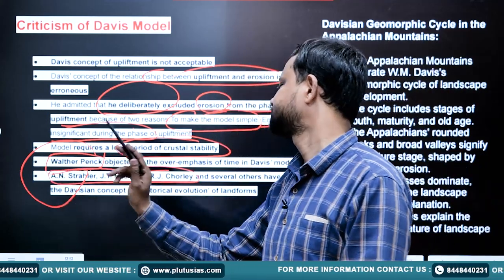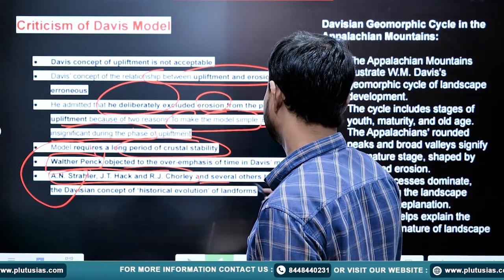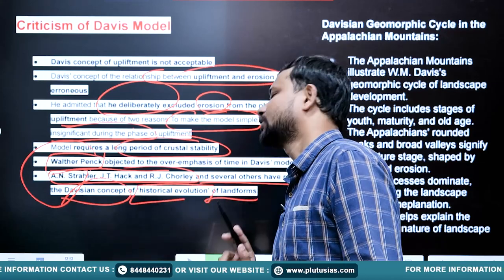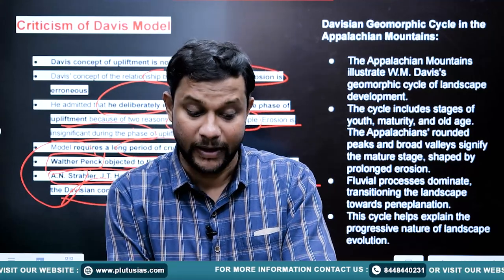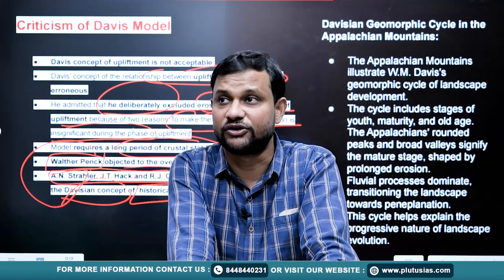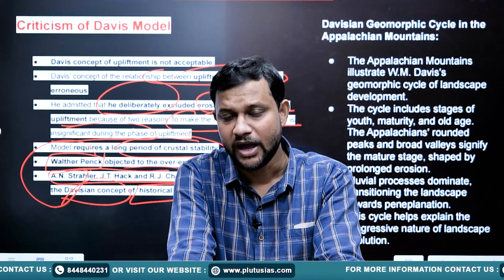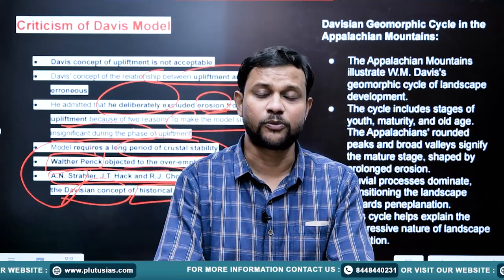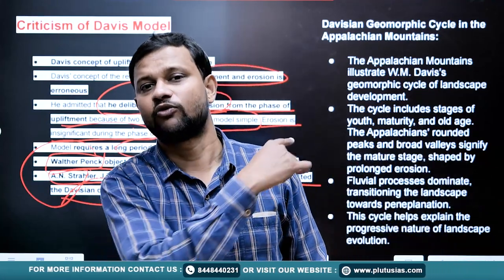In modern times, quantitative geographers like Chorley and Strahler, among several others, have rejected the Davisian concept of historical evolution of landforms. Davis's model has been criticized on many counts, but proposing this kind of revolutionary idea makes Davis unique. His model still finds relevance in topographical and historical evolution of landforms — as seen with the Aravallis.